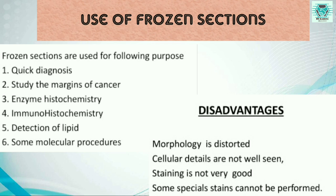The advantages of using frozen sections in the cryostat are: (1) quick diagnosis, (2) study of the margins of cancer, (3) enzyme histochemistry, (4) immunohistochemistry, (5) detection of lipid, and (6) some molecular procedures. These things can be quickly done using frozen sections. However, there are some disadvantages: morphological distortion, cellular details are not well seen, staining is not very good, and some special stains cannot be performed.